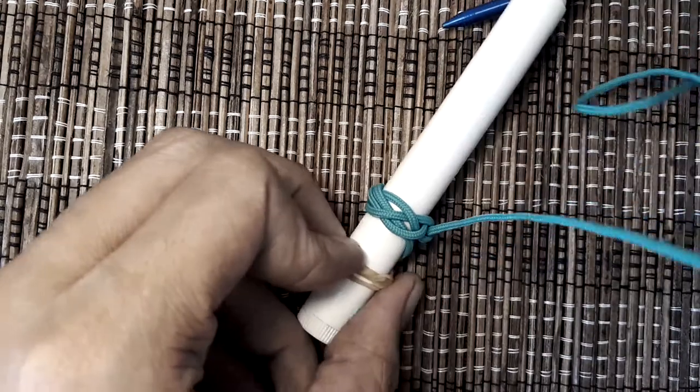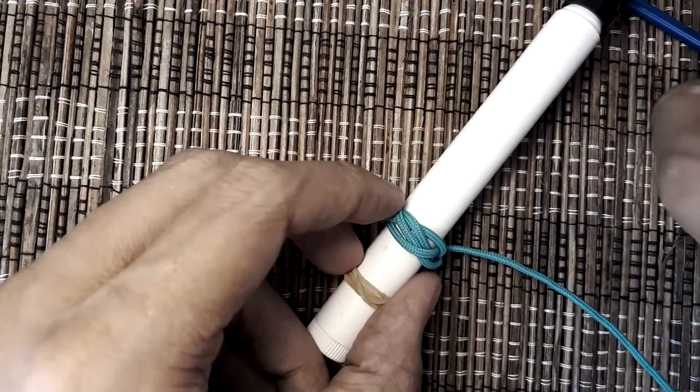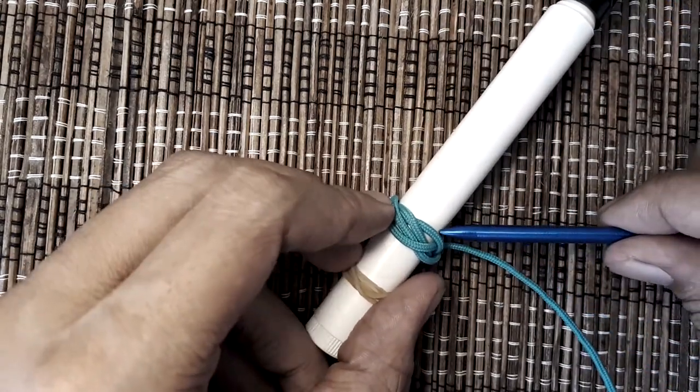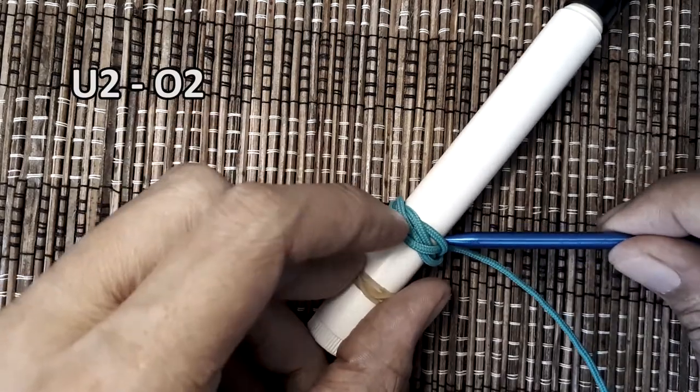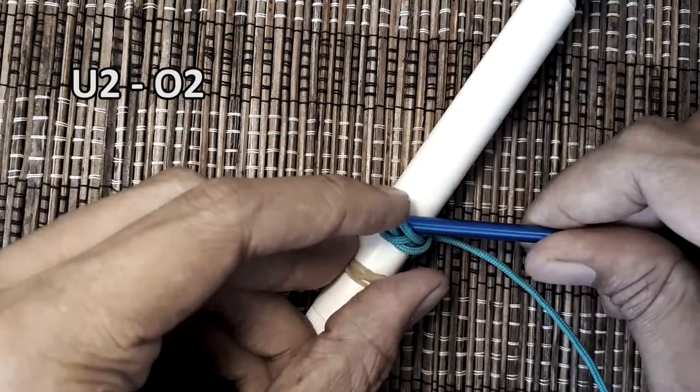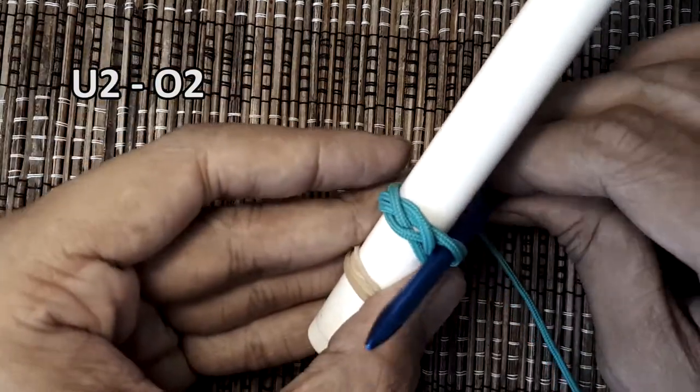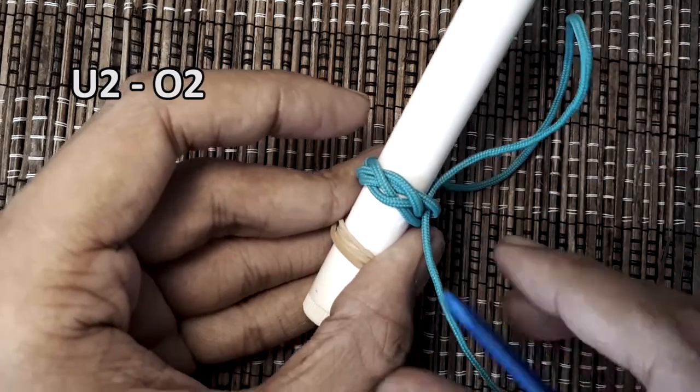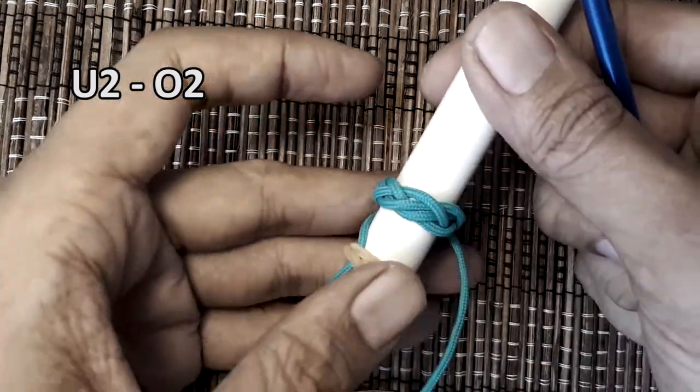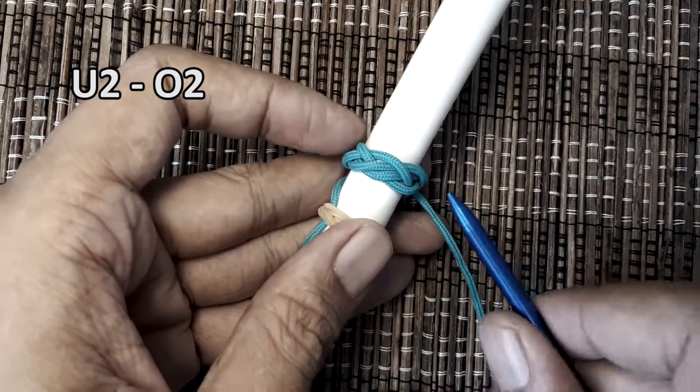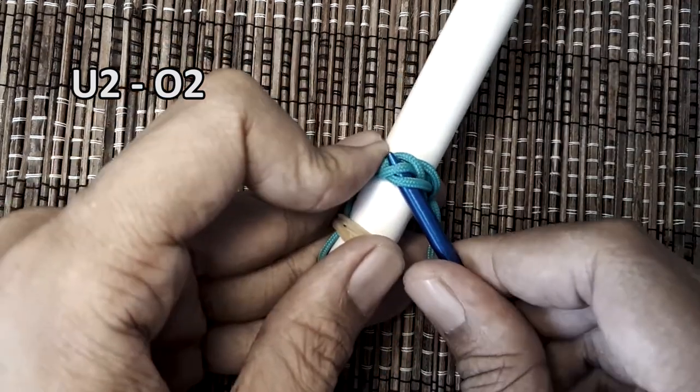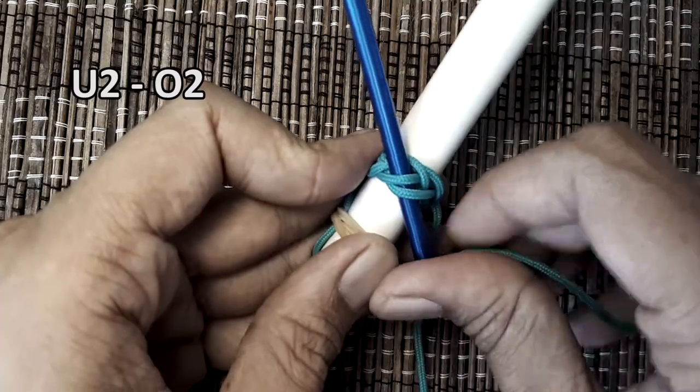We have created several pairs in the middle of the knot and so you want to split them by going under 2, over 2. Again, split the pair by going under 2, over 2.